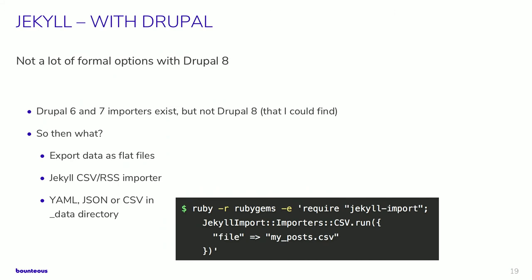Talking about using Jekyll with Drupal: from my experience there really aren't many formal options with Drupal 8. Jekyll has the concept of importers, and there are importers for Drupal 6 and 7, but not a finished version for Drupal 8 that I could find. If you wanted to use Jekyll, any way you can get your data out of Drupal as flat files would work — a CSV views data export, RSS feeds, or YAML/JSON/CSV data in the data directory. Really not as many pre-packaged, ready-to-go Drupal options compared to some of the other tools.